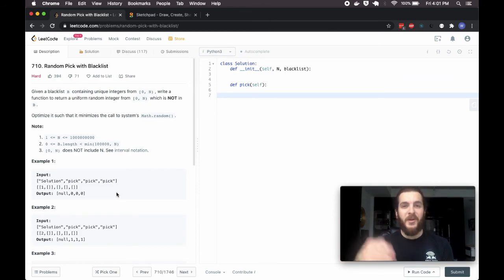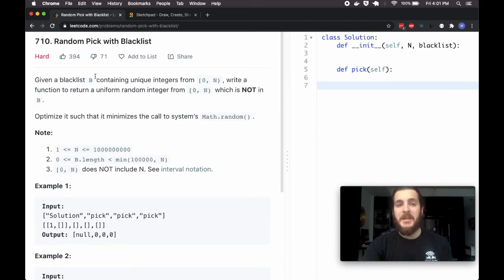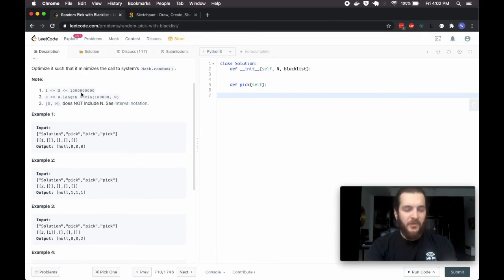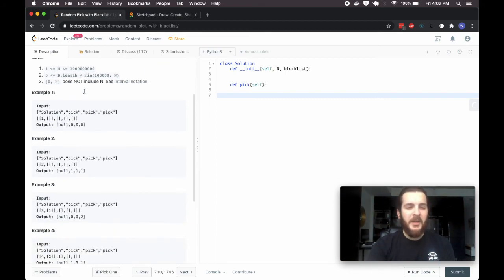If you have any requests yourself, my contact is down below, as always. In this problem, we're given a blacklist B containing unique integers from 0 to N. 0 being inclusive, N being not inclusive. And we need to write a function to return a uniform random integer from 0 to N, which is not in B. So return a number that's not in the blacklist. Optimize it such that it minimizes the call to system's math.random. So call that function as little as possible.